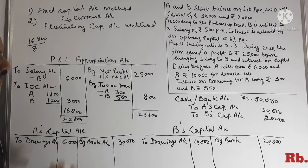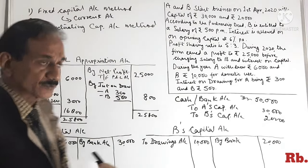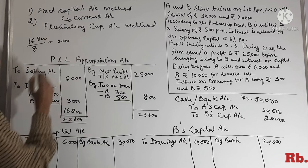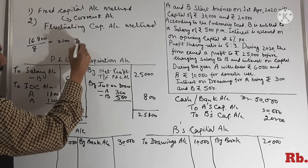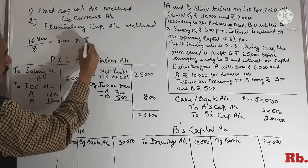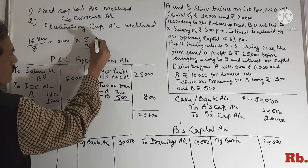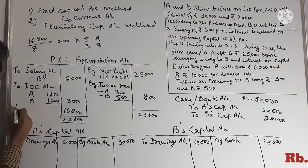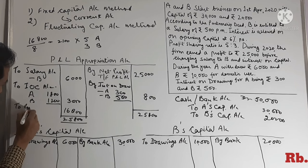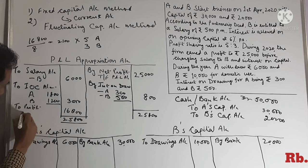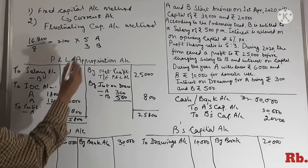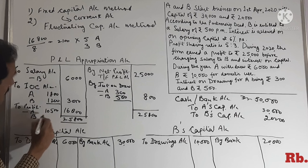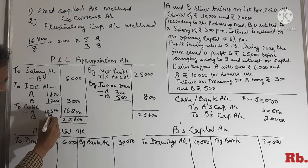Rs.16,800 ko 8 parts mein baatna hai. Profit sharing ratio is 5:3. 8 parts mein baata to ek part Rs.2,100. A ko milenge 5 parts, B ko milenge 3 parts. To profit: A Rs.10,500, aur B Rs.6,300. Total Rs.16,800.